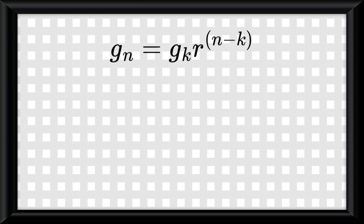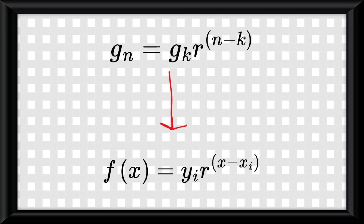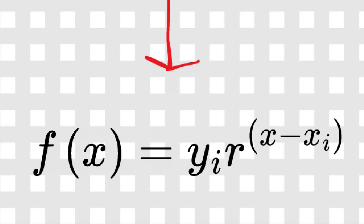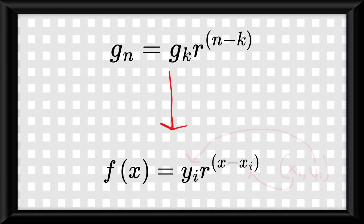Funny enough, the second geometric sequence equation can be transformed into an exponential function, written as f of x equals y-sub-i multiplied by r to the power of x minus x-sub-i, where it includes the point (x-sub-i, y-sub-i) in its equation.